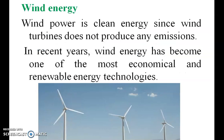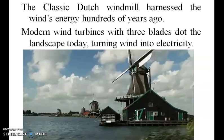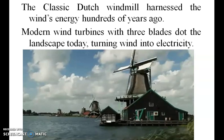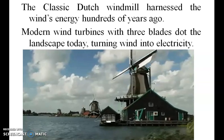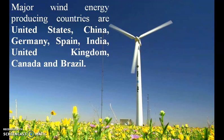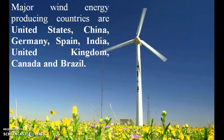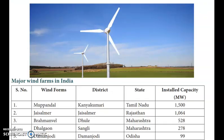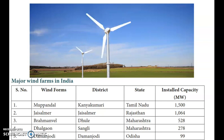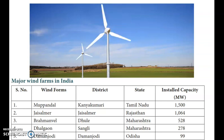Wind energy: wind power is clean energy since wind turbines do not produce any emissions. The classic Dutch windmill harnessed wind energy 100 years ago. The modern wind turbine with three blades dots the landscape today, turning wind into electrical energy. The major wind energy producing countries are United States, China, Germany, Spain, India, United Kingdom, Canada and Brazil. The major wind farms in India are Upandal in Kanyakumari, Jaisalmer in Rajasthan, Brahmanwada in Maharashtra, Dalgon in Maharashtra and Damankodi in Odisha.